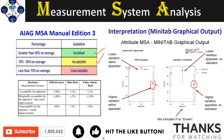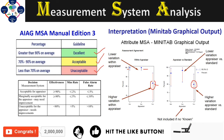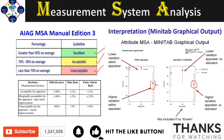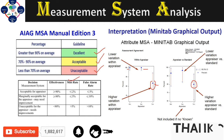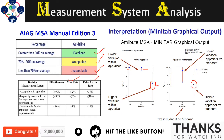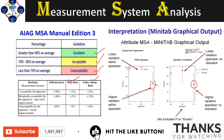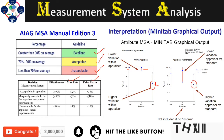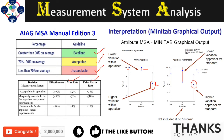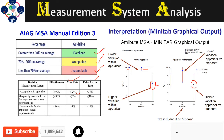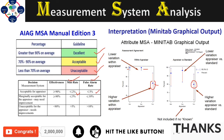If the agreement is less than 70% it is unacceptable. Two additional metrics to look at are the miss rate and the false alarm rate. The miss rate is the number of times an operator identifies a bad part as a good part. The false alarm rate is the number of times an operator identifies a good part as a bad one. If attribute agreement is greater than 90%, miss rate is less than 2%, and false alarm rate is less than 5%, then the study is acceptable.